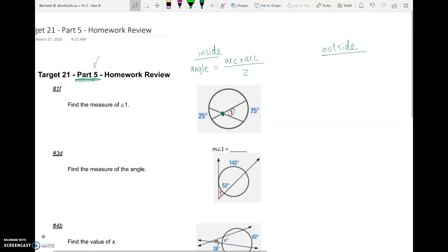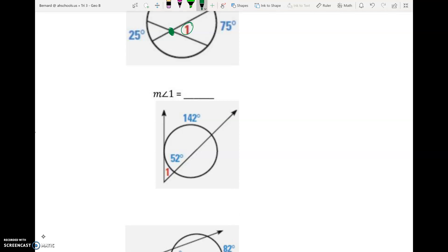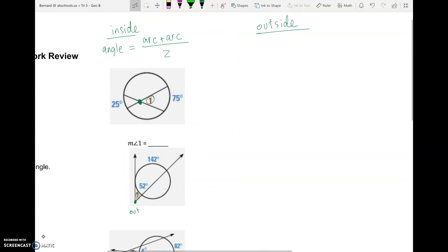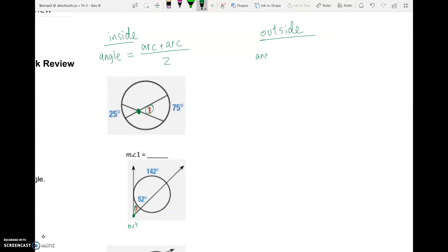But then sometimes we have angles on the outside. And so that's like 3D here. And we know it's on the outside because take a look at where these two lines intersect. Outside. And we're looking for that angle 1 on the outside. And in general, the equation for finding an angle on the outside is that our angle will equal arc minus arc divided by 2.